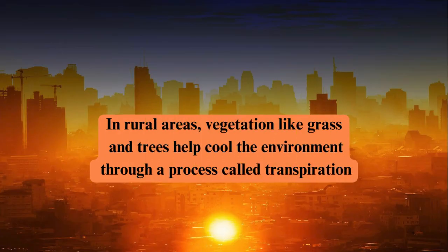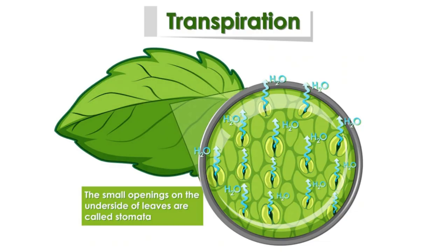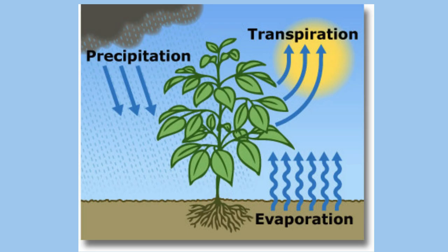In rural areas, vegetation like grass and trees help cool the environment through a process called transpiration. This natural air conditioning occurs when plants absorb water from the ground and release water vapor into the air through their leaves.